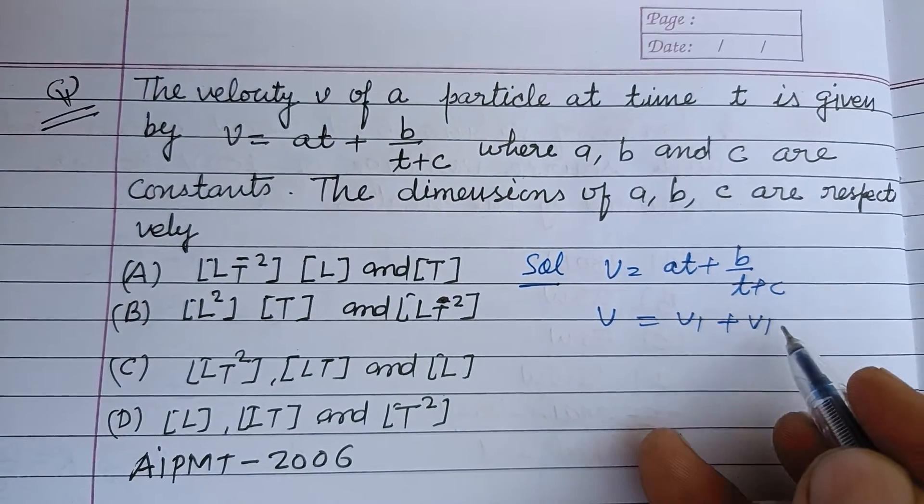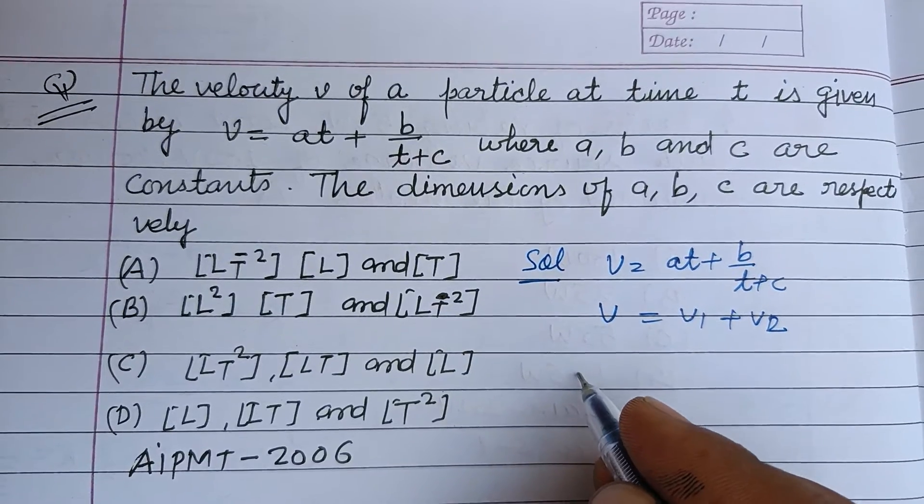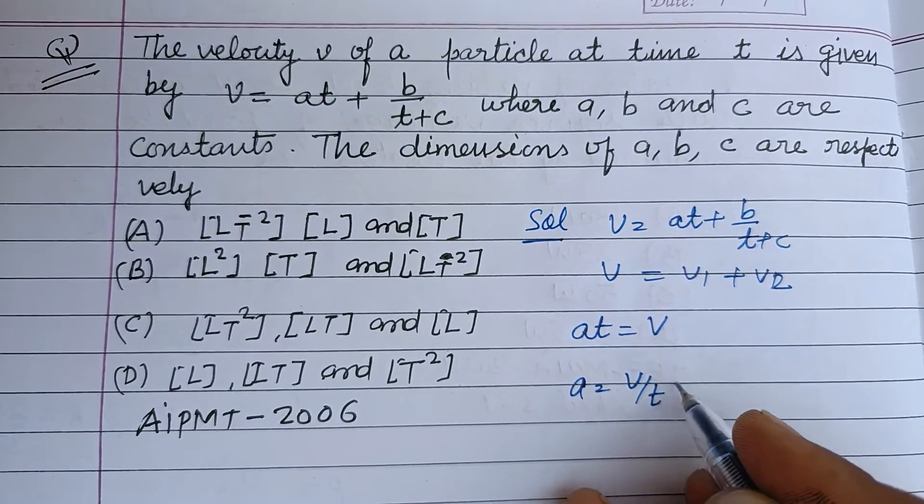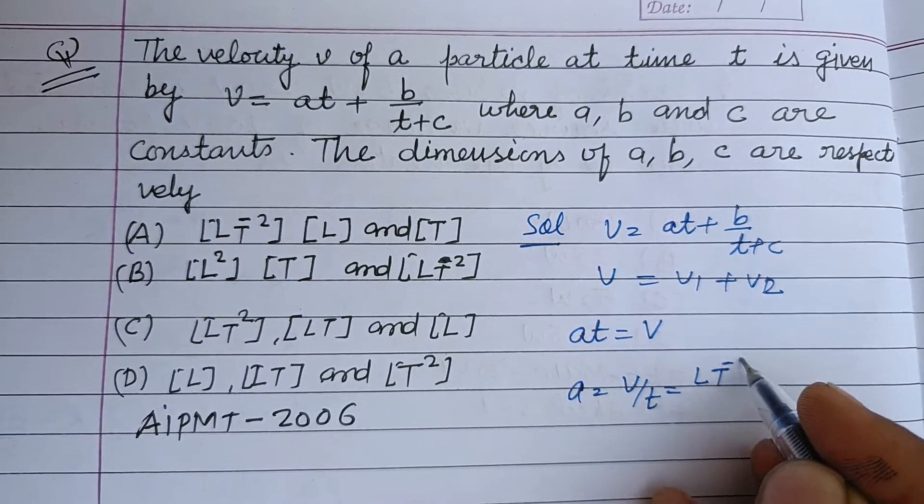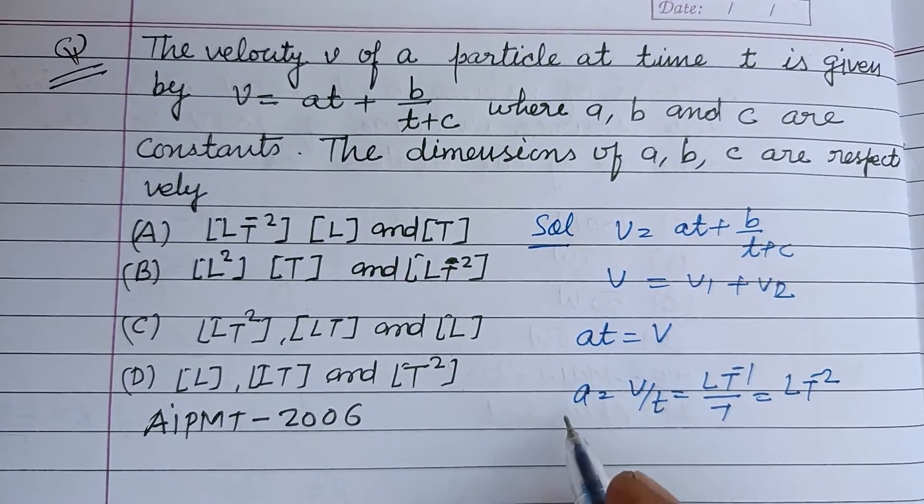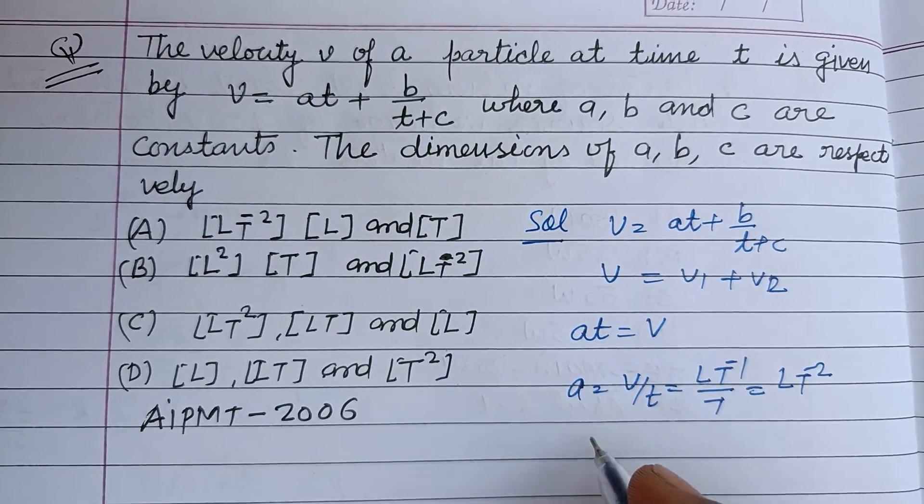So at = v, therefore a = v/t. v is L T^-1 and t is T, so this is L T^-2. So a is L T^-2.